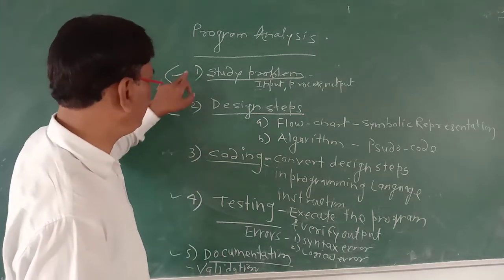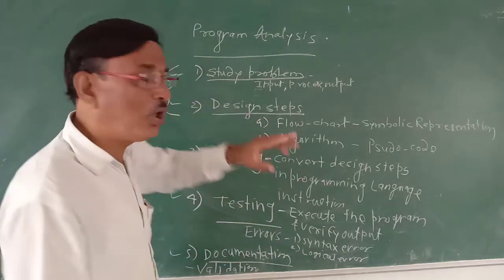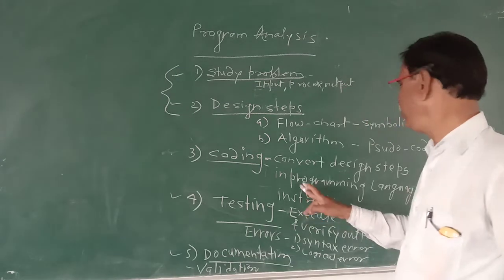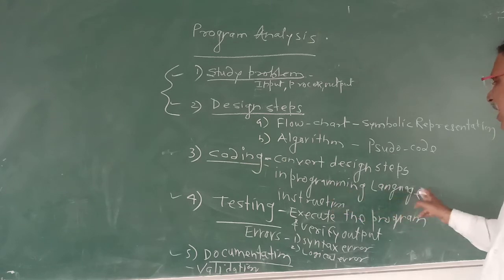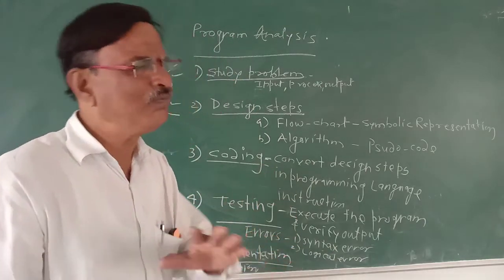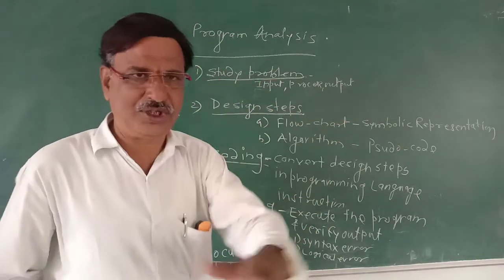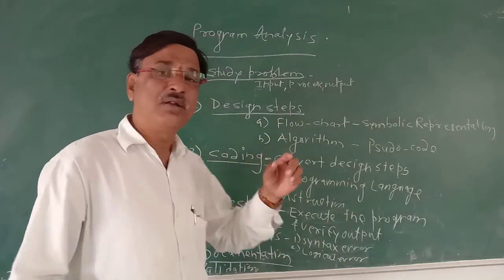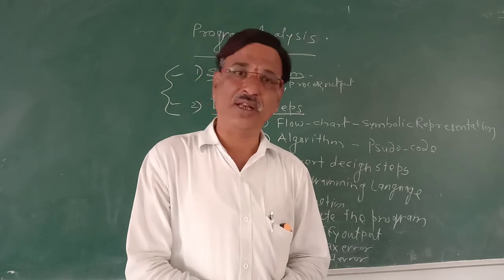Now, these two steps - studying the problem and design steps - we are currently studying. We have used them and gone through them. We have drawn flowcharts and written algorithms. Just the coding step we have not done. Why? Because right now we don't know any programming language, and coding is the step in which we convert the design step into programming language. That is why coding is a step we can't go through yet. We can study the problem, draw flowcharts, or write algorithms. But for coding, we must know a programming language.